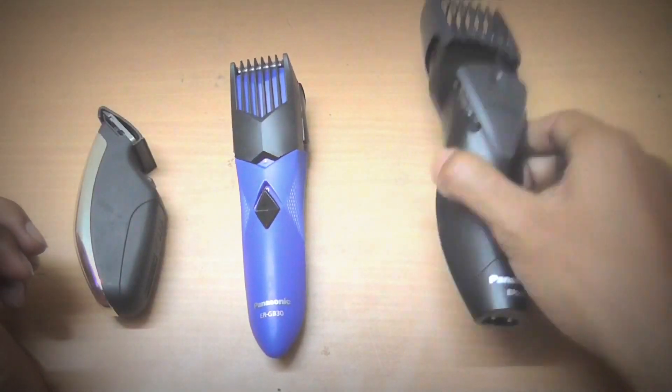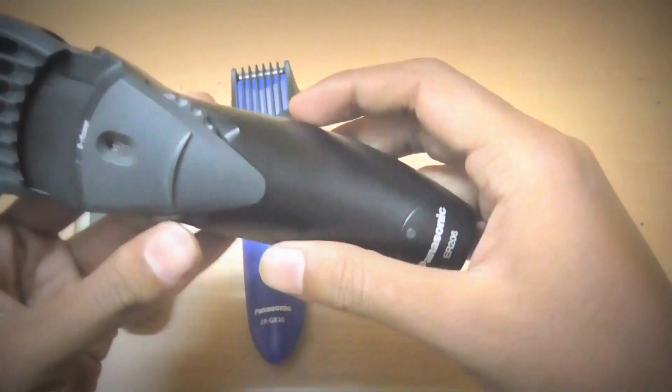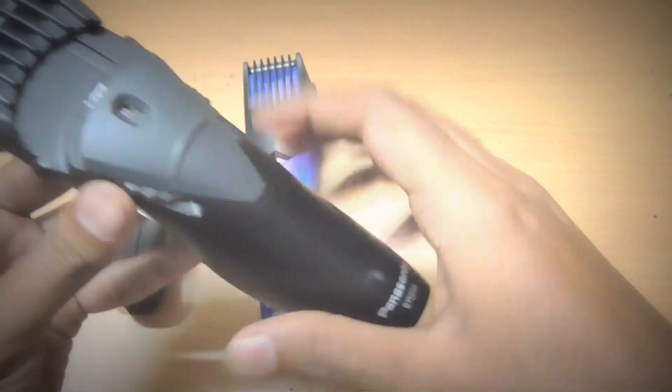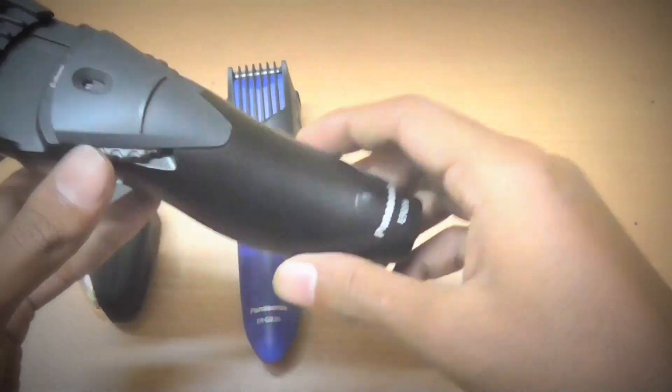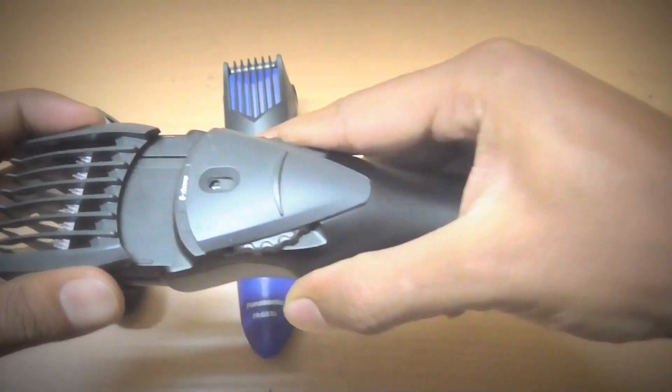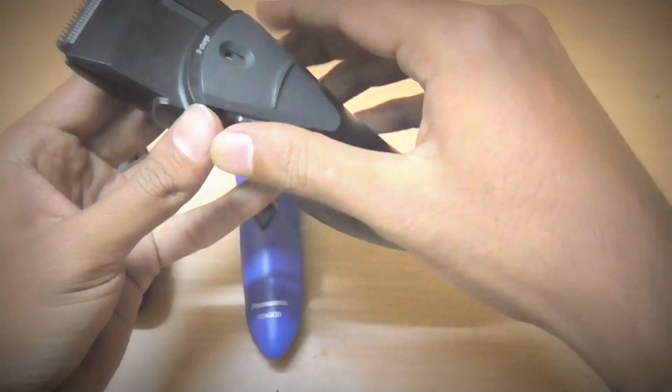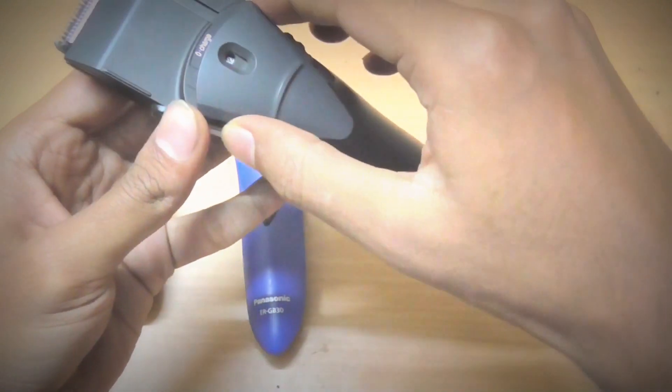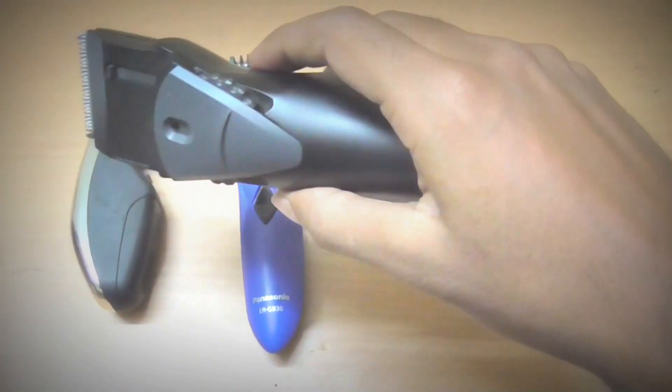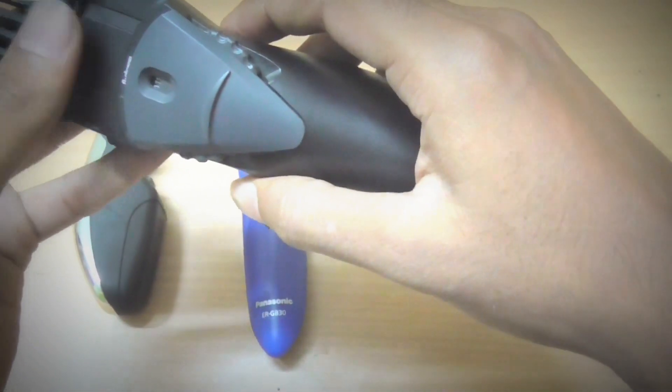In terms of design, I found that ER206 has a better ergonomic design. It is not very light and not very heavy, which is perfect for travelling and for home users. As you can see it is very comfortable to hold in a hand. It comes with several different adjustments which make it suitable for long and short hair. The total adjustment that you can find is ranging from 2 to 18mm.